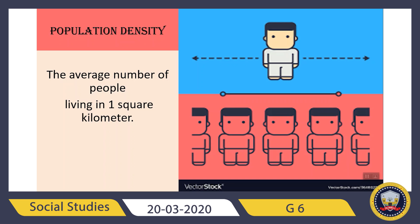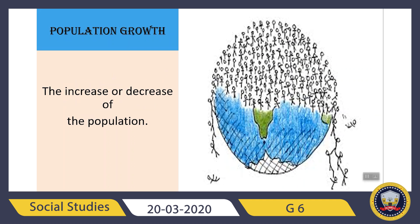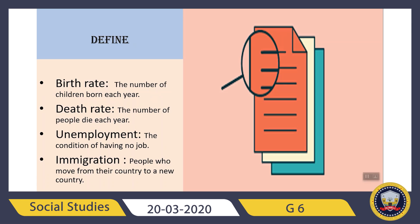Population Density: the average number of people living in one square kilometer is called Population Density. We drew a detailed picture explaining this topic in class. Then we have Population Growth: the increase or decrease of the population is called Population Growth.